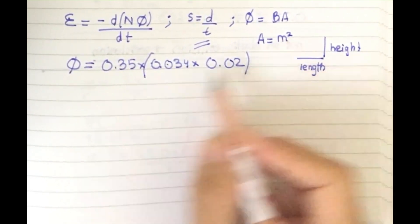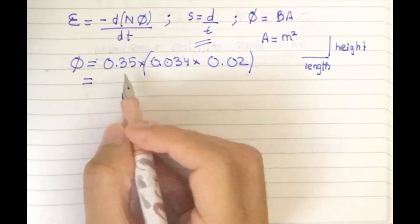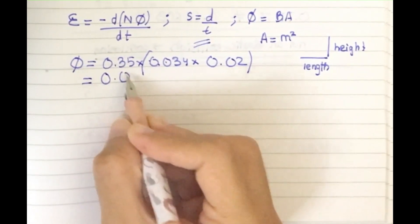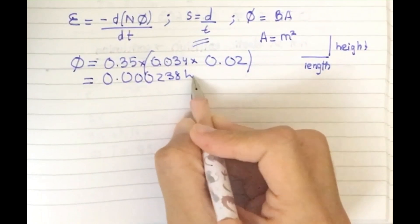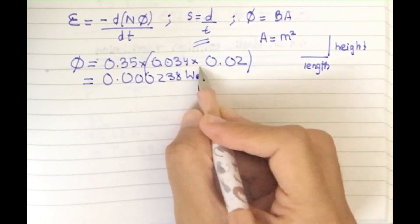This value I'm going to get as 0.000238 webers.